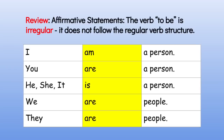Let's also review affirmative statements with the verb 'to be,' which is very irregular and does not follow the regular verb structure. I am a person. You are a person. He, she, it is a person. We are people. They are people.